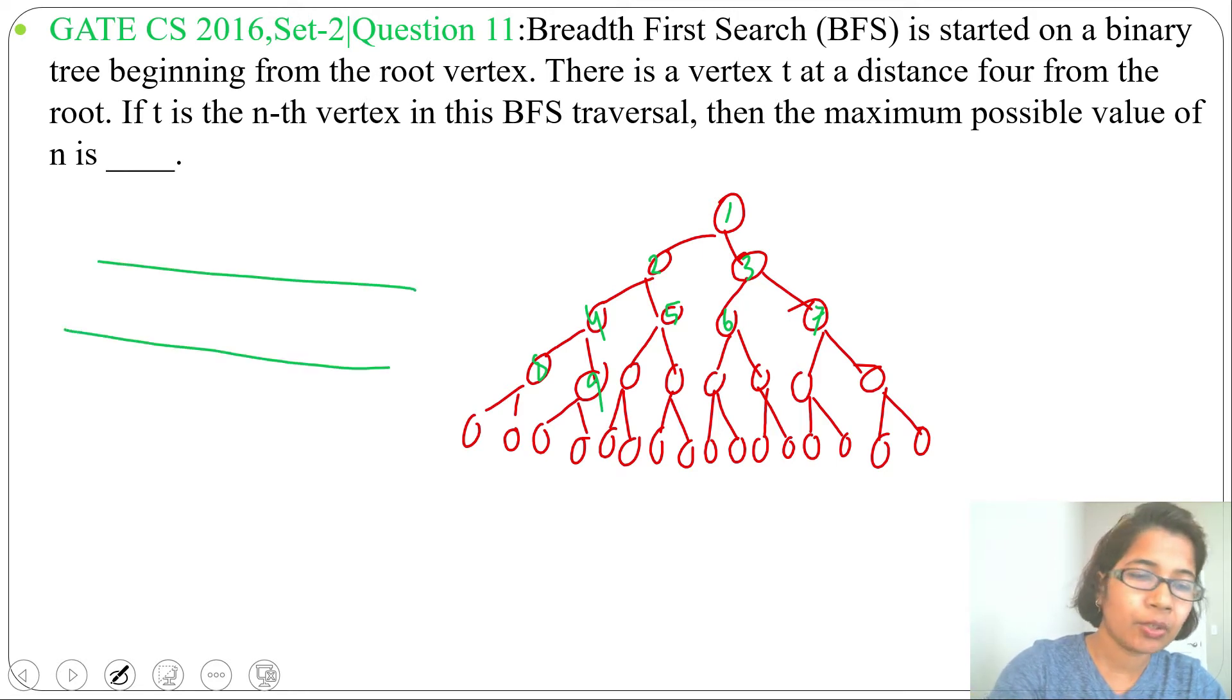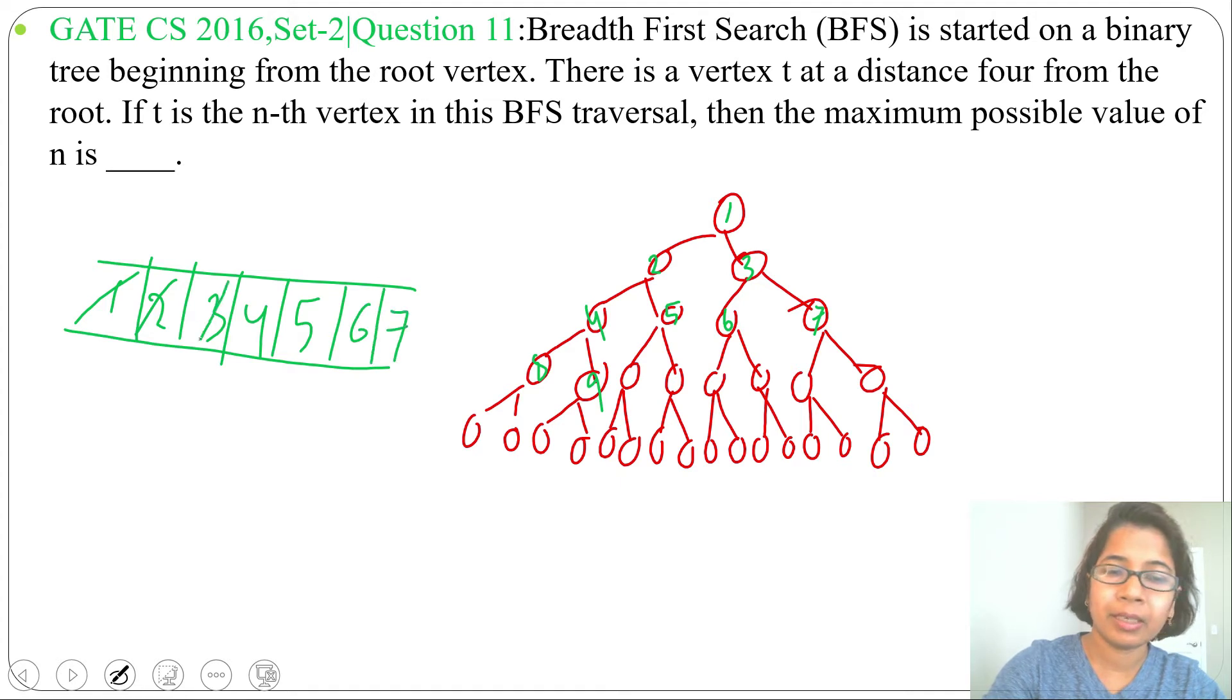first we insert 1 into the queue. Next, we insert its adjacent nodes 2 and 3 into the queue and delete 1. Next, we insert 2's adjacent nodes 4 and 5 and delete 2. Next, we insert 3's adjacent nodes 6 and 7 and delete 3. It continues like this.